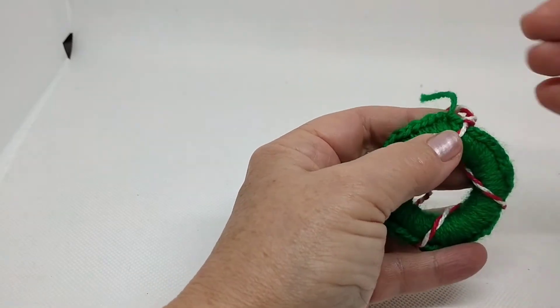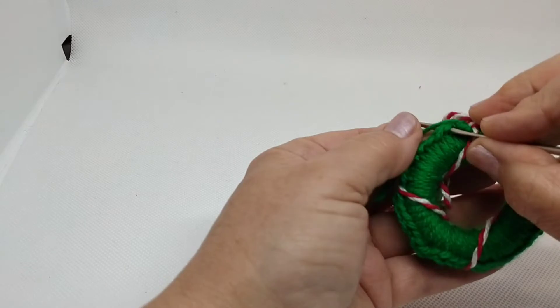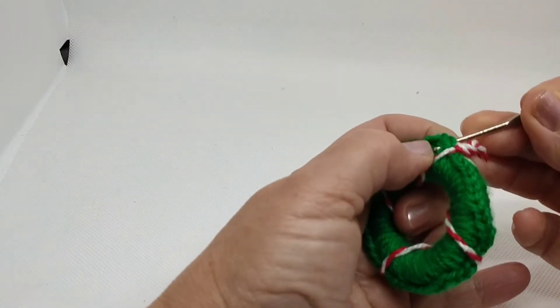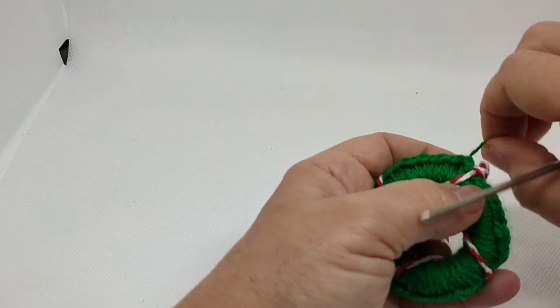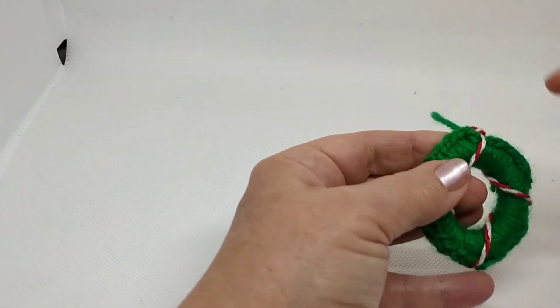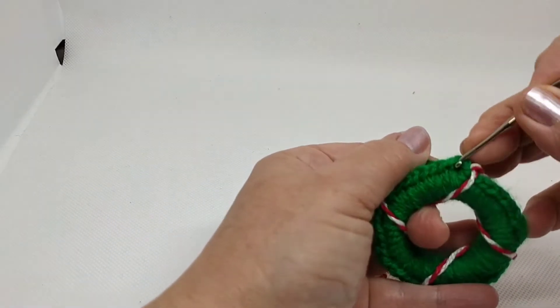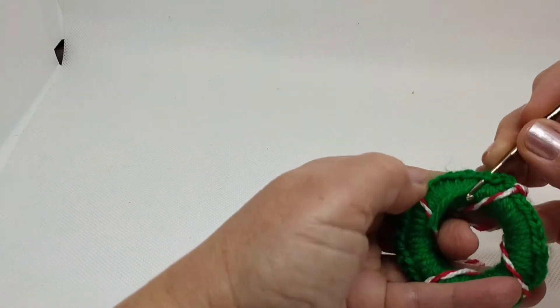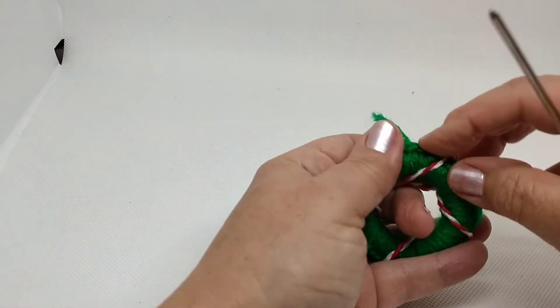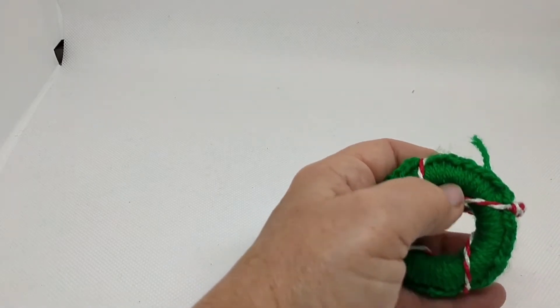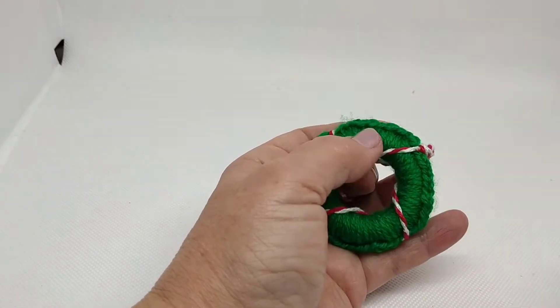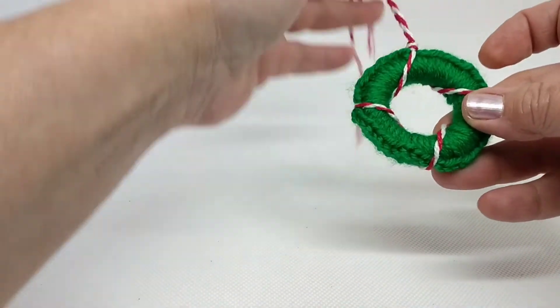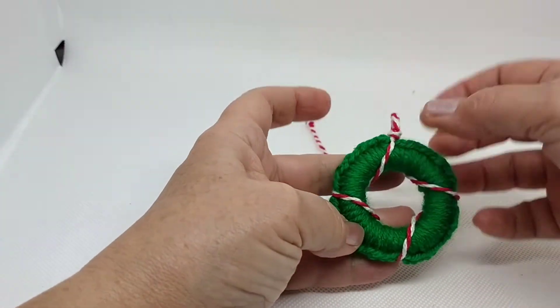Este cabo que dejamos aquí lo vamos a esconder para que no nos quede por ahí visible. Lo vamos a esconder de esta forma, entre los puntos de la cadeneta. Así queda un poquito más afianzado. Y podemos esconderlo tanto como deseemos. Y ya podemos cortar. Aquí lo fijamos con un nudito y ya nos queda nuestra coronita, el primer adorno.